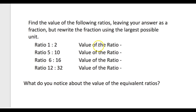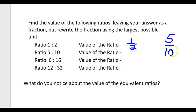The ratio 1 to 2: the value of a ratio is the quotient of the two numbers, so the value is 1 divided by 2, or one-half. The ratio 5 to 10 is written as five-tenths, but we can reduce that by dividing numerator and denominator by 5. Five divided by 5 is 1, and ten divided by 5 is 2, so we get one-half.